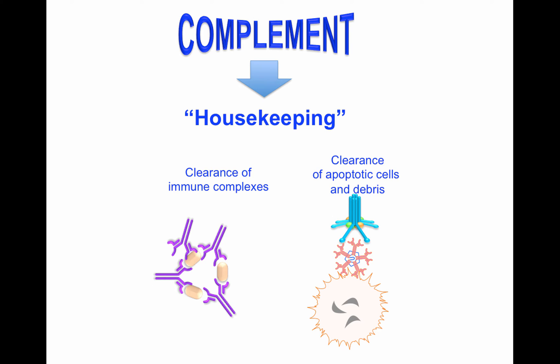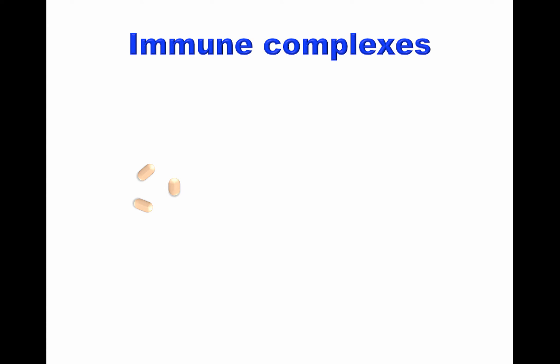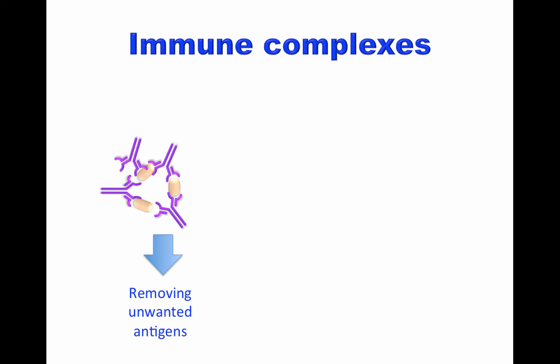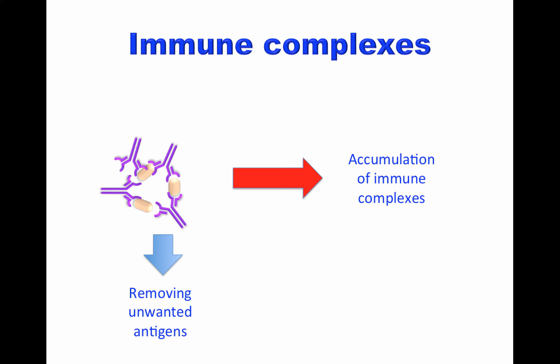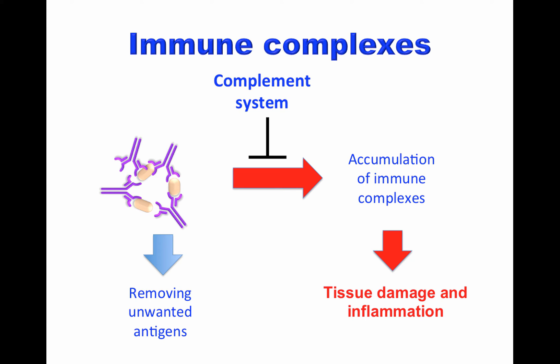The immune complexes and apoptotic cells must be removed very efficiently to avoid tissue damage caused by inflammation. Immune complexes are constantly produced and is a way to remove unwanted antigens from circulation. Accumulation of immune complexes in our body can lead to tissue damage and inflammation. Systemic lupus erythematosus is an immune disease associated with a lack of removal of apoptotic cells and immune complexes from circulation. The complement system, particularly the classical pathway, protects the host and makes sure that immune complexes are removed efficiently from circulation.